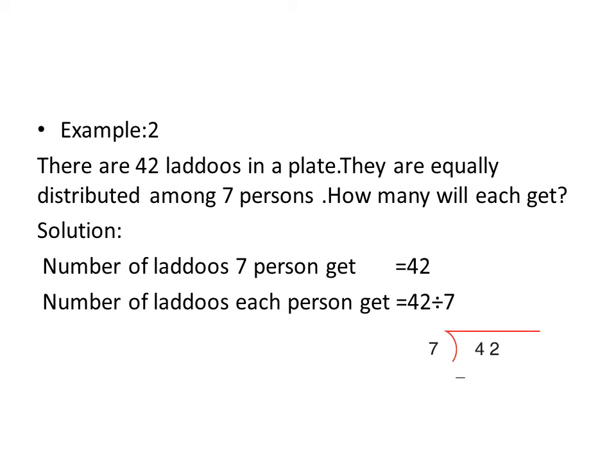Now divide 42 by 7. First of all, arrange it as shown below. Here, 42 is your dividend and 7 is your divisor. First, we see the first digit of the dividend. What is the first digit? 4. And what is your divisor? 7. Is 4 less than 7? Yes. If the first digit of the dividend is less than the divisor, then we take the next digit also. Now it becomes 42.